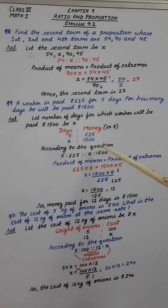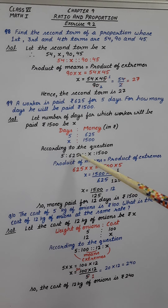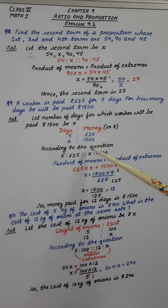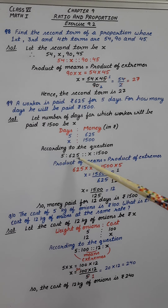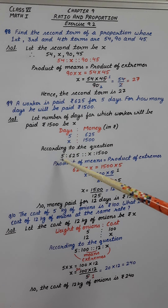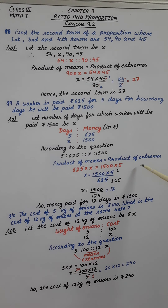According to the question, we write it in proportion. Number of days 5 and money paid 625 are in ratio, then proportion with number of days x and money paid Rs. 1500. So we write it in proportion form: days and money paid, then again days and money paid.